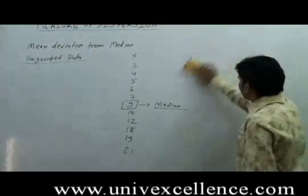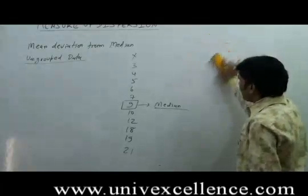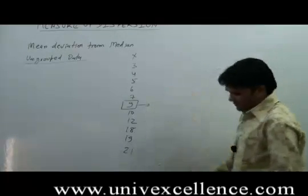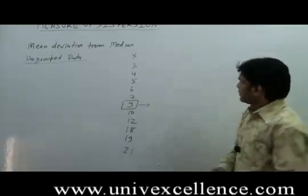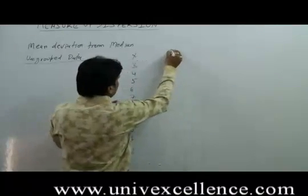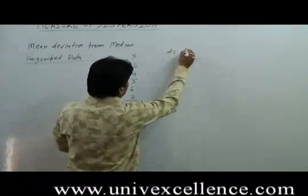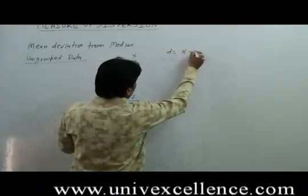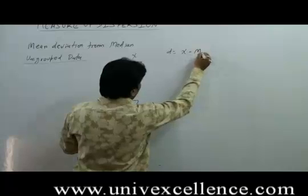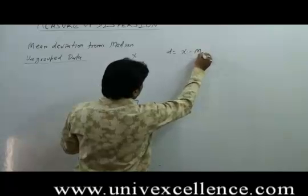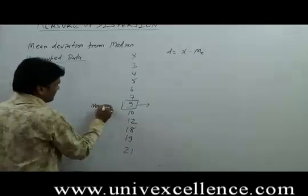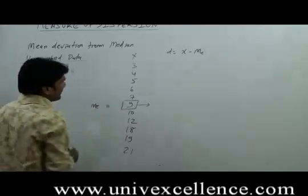After finding out the median, we find out the deviation of each data value from the median. The deviation d = x minus M, where M represents the median. Here the median M is 9.